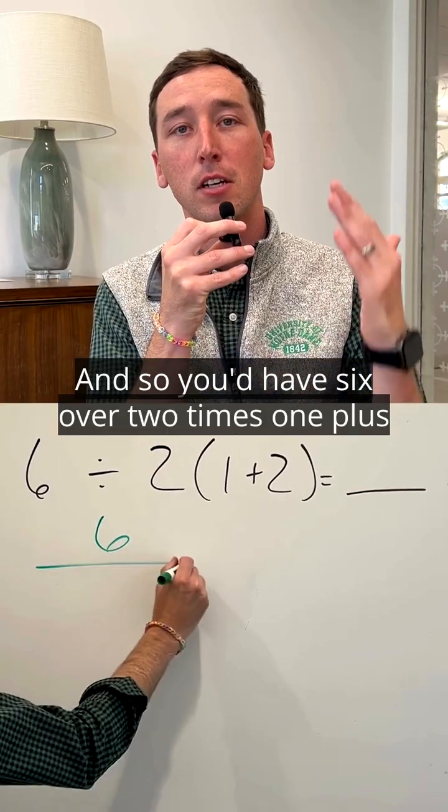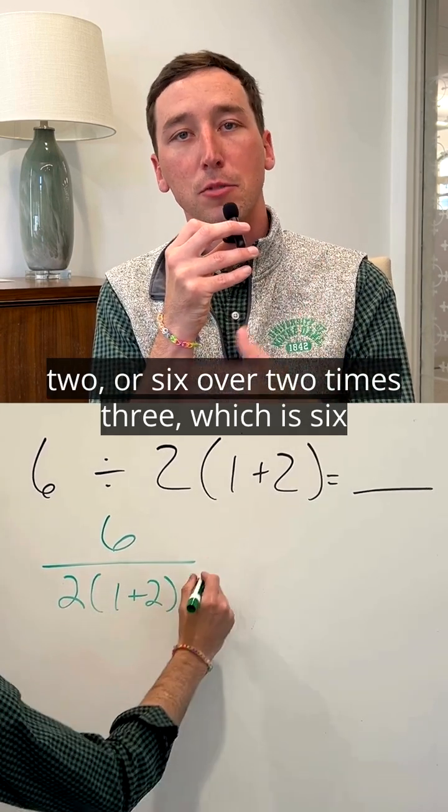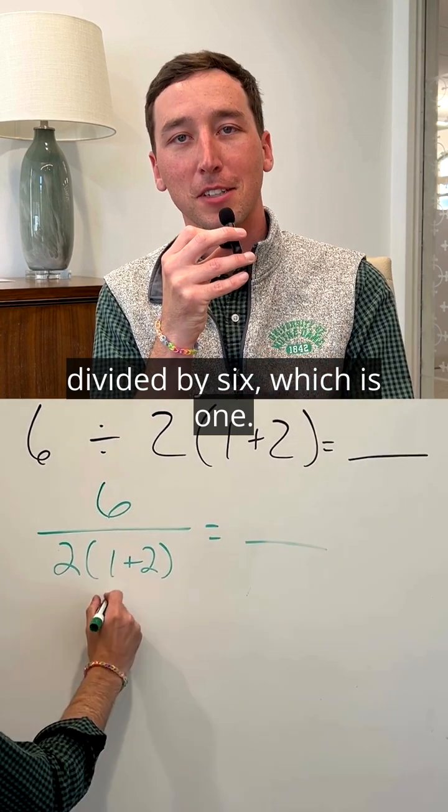And so you'd have 6 over 2 times 1 plus 2, or 6 over 2 times 3, which is 6 divided by 6, which is 1.